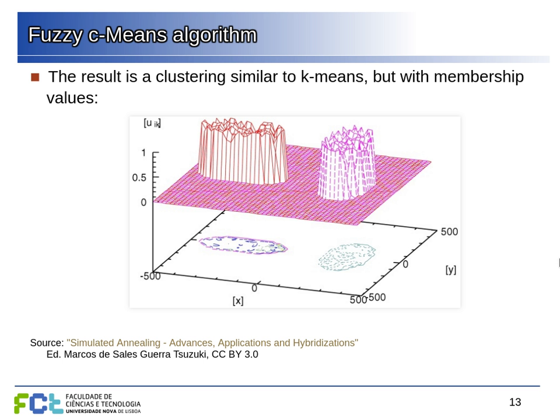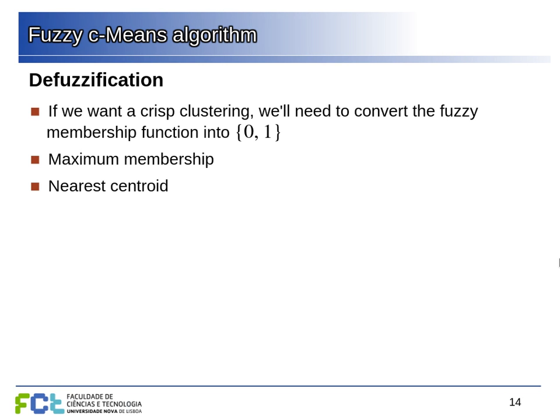We can go from fuzzy clustering to crisp clustering — where each element belongs to only one set — in different ways. For example, we can assign each example to the cluster where it has the maximum membership value, setting all others to zero. We can also use distance to the centroid or similar measures. It's possible to go from fuzzy to crisp clustering by deciding on some cutoff for the membership values.